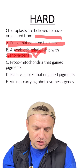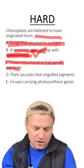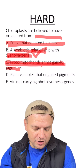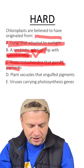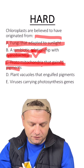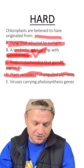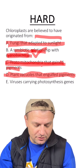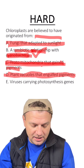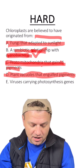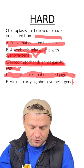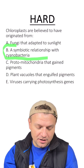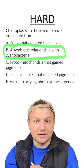C, protomitochondria — no, they evolved alongside mitochondria, but they're not protomitochondria. D, plant vacuoles that engulf pigments — that's a good wrong answer, it sounds right because it mentions pigments, but that's not the right answer. E, viruses carrying photosynthesis genes — no, they're not viruses. This is why B is the right answer.